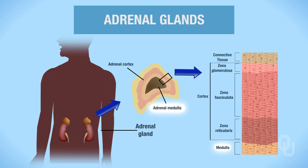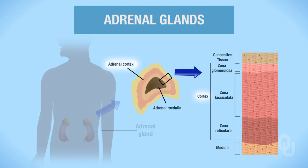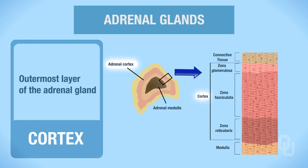Remember that the adrenal glands sit on top of the kidneys — think of it as the hat for the kidney. Now let's focus on the adrenal cortex, that outermost layer of the adrenal gland.